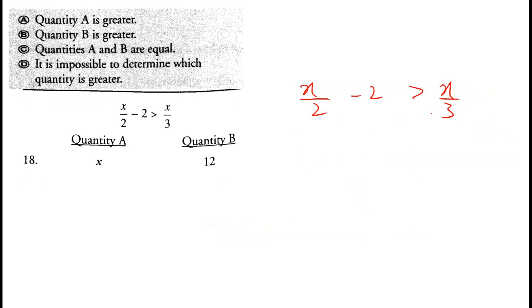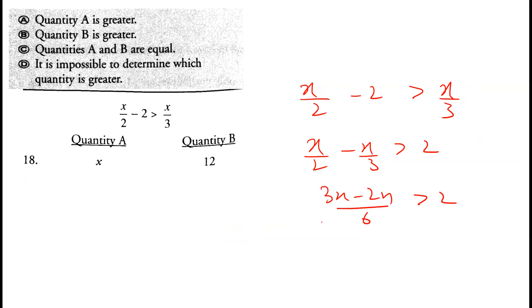Question 18: x over 2 minus 2 is greater than x over 3. Rearranging: x over 2 minus x over 3 is greater than 2, giving (3x minus 2x) over 6 greater than 2, so x is greater than 12. Option A is correct.